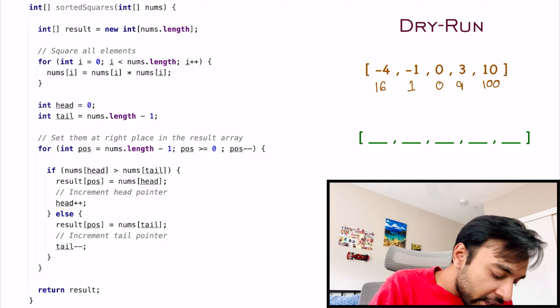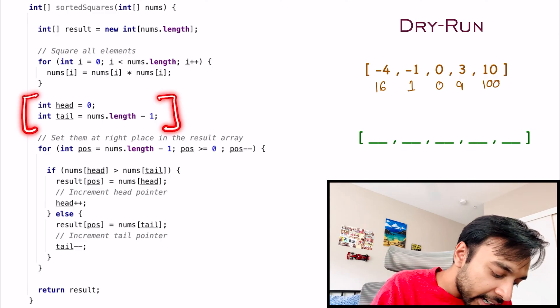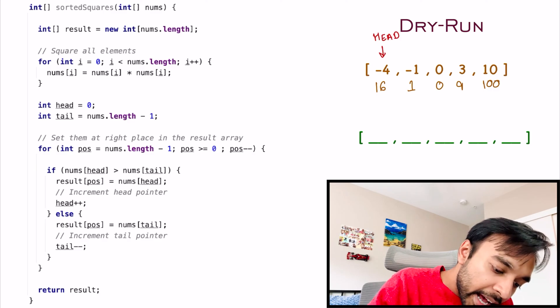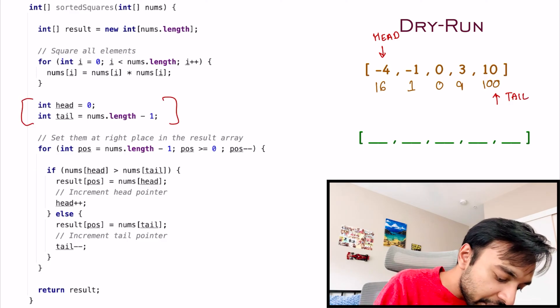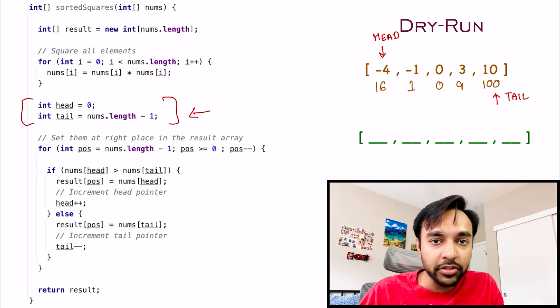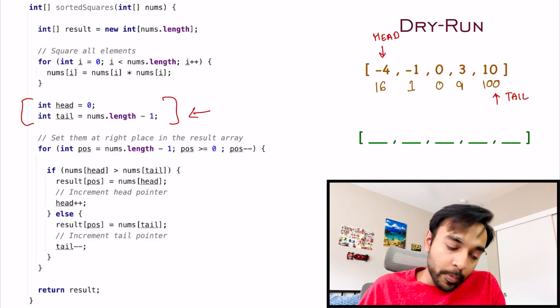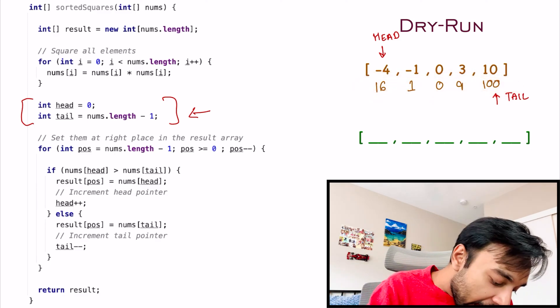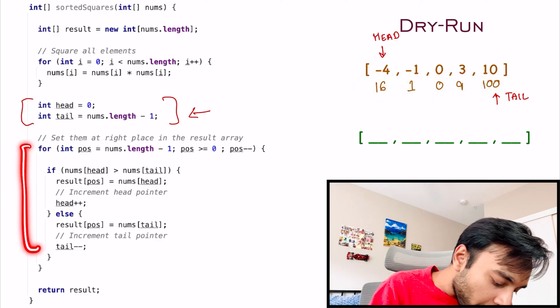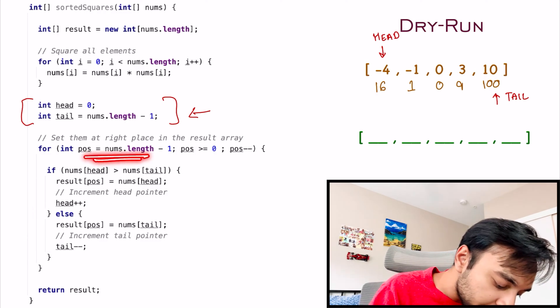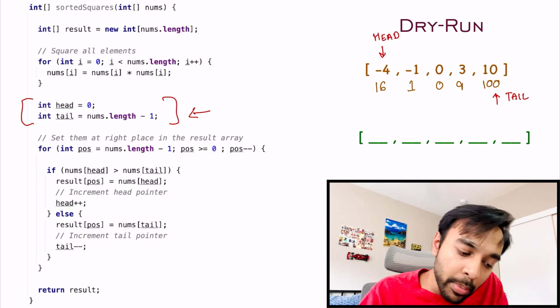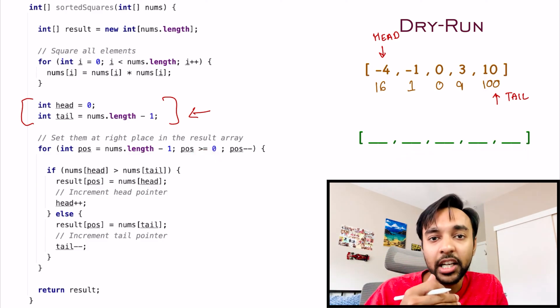Now, in the next step, we assign two pointers, a head and a tail. So, the head pointer points at the first element and the tail pointer points at the last element. That is where the 0 and nums.length-1 comes from. Moving on, what I need to do? I need to place all of these elements in their correct positions. And, to do that, I will start a for loop, which starts at the last position in my result array and goes all the way to 0. So, I will be filling this result array from last all the way to the first element.